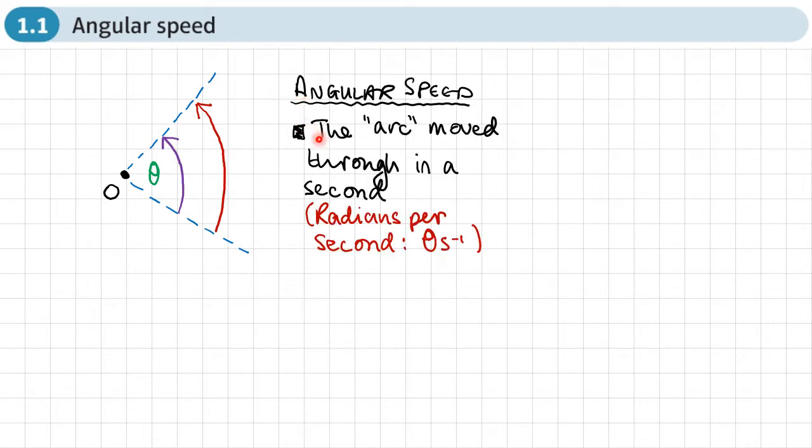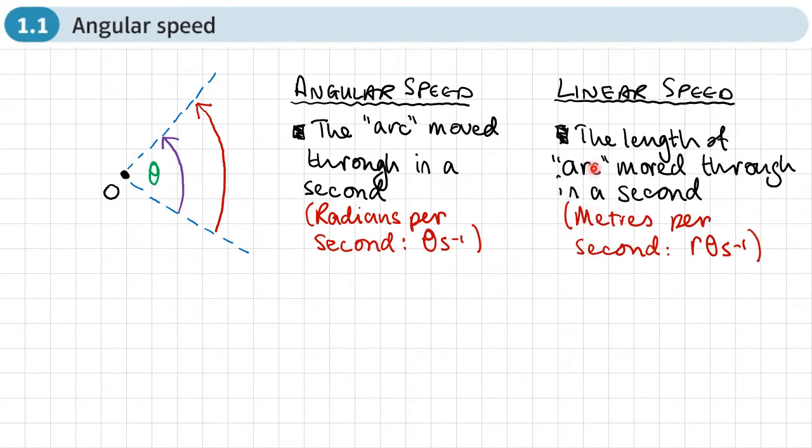So angular speed is basically this arc moved through in a second, that's the time scale we use, and this angle that we're interested in, we measure in radians. So the units for angular speed are radians per second. How much angle have you turned through in a second? Linear speed is basically the length of this arc traveled or moved through in a second, and its units are meters per second.